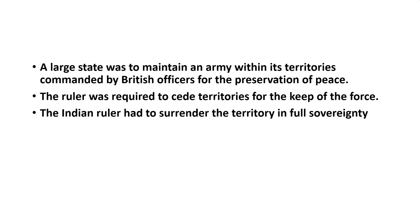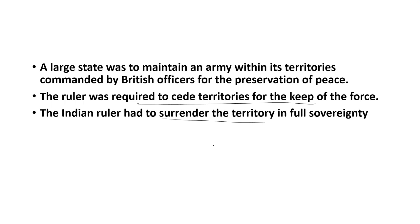A large state was required to surrender its territories in full sovereignty to the English East India Company for the maintenance of British troops at their capitals. The Indian ruler also had to surrender these territories in full sovereignty, meaning the Indian ruler would have no further say over territories handed over to the British. In these areas, revenue collection and administration would all be vested in the hands of the British, and the Indian ruler would in no way interfere with the administration of these ceded territories.